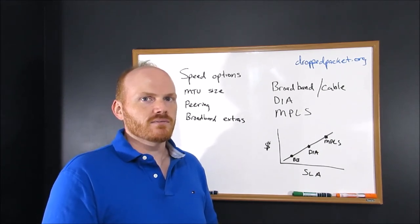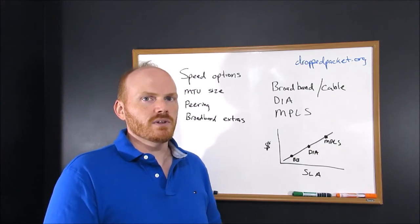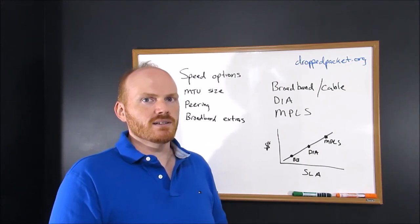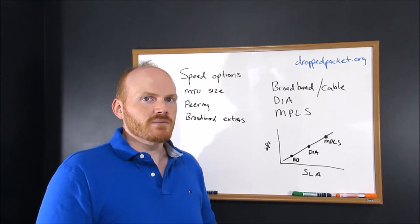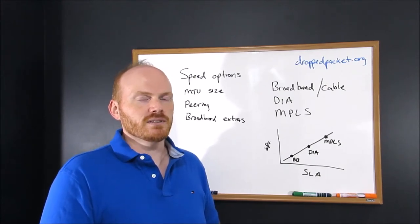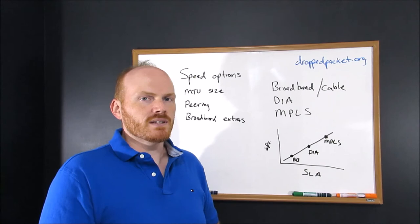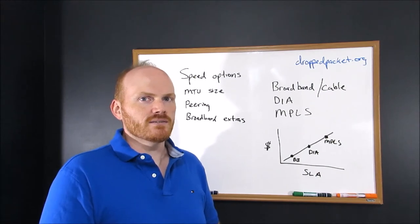DIA is the next step up. You're going to pay a little bit more, but you typically get good repair SLAs with that. Sometimes you get performance SLAs, but not typically. The most expensive of these options is MPLS, which include both performance and repair SLAs.